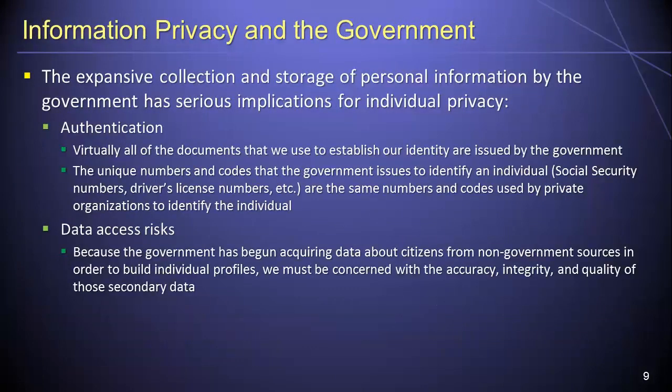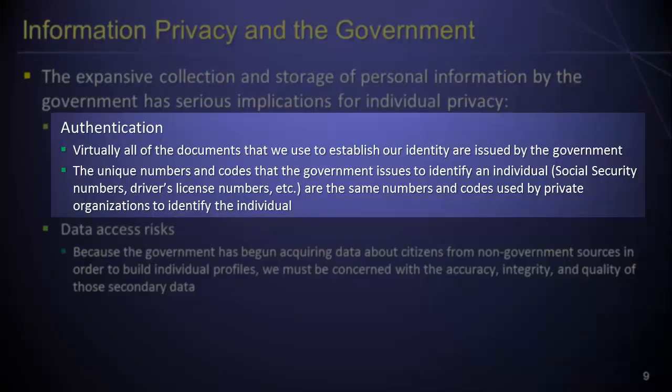The rapidly expanding collection, storage, and analysis of individuals' personal information by governments around the world presents serious implications for individual privacy. Consider, for example, that virtually all of the documents a person uses to establish her identity are issued by a government. The various unique numbers and codes that governments use to identify individuals — such as social security numbers and driver's license numbers — are often the same numbers used by other organizations to identify individuals. Because of this, both governments and organizations can easily link together information about you gathered from multiple sources in order to produce a detailed profile of you as an individual.